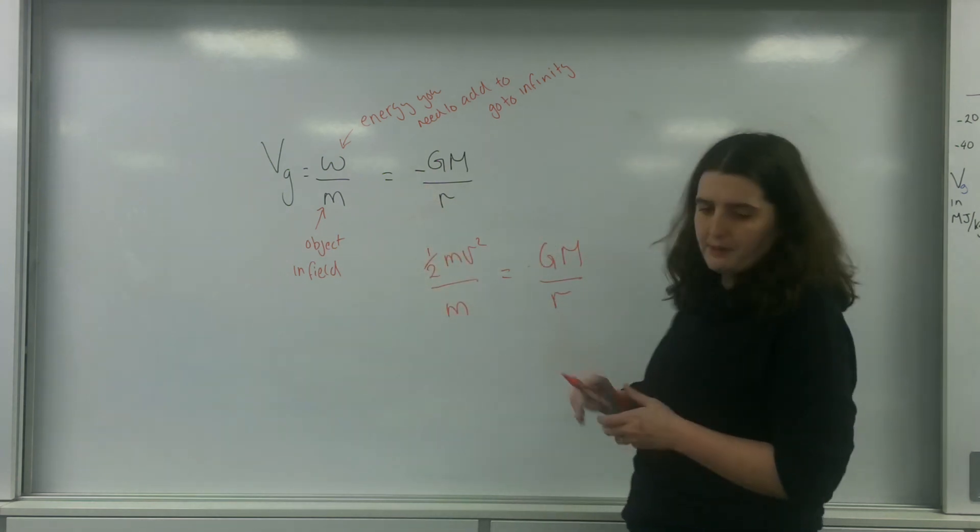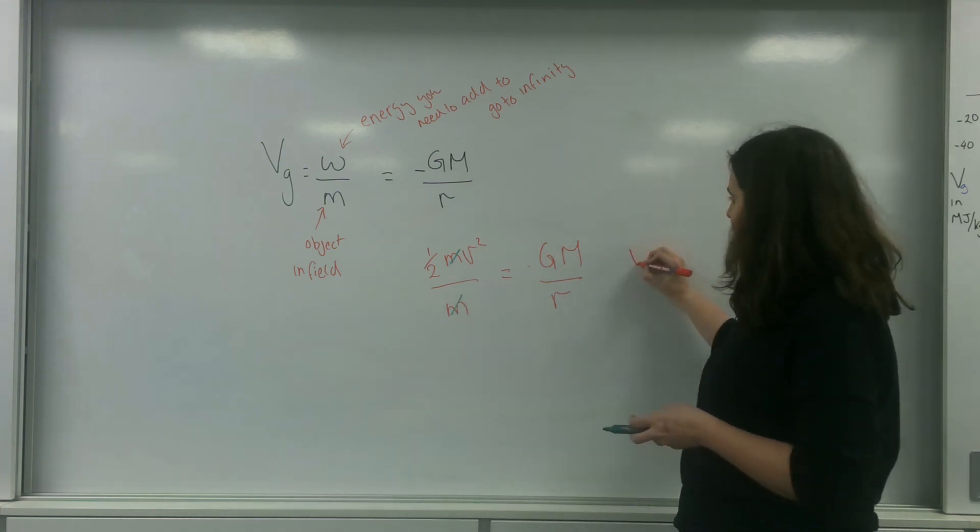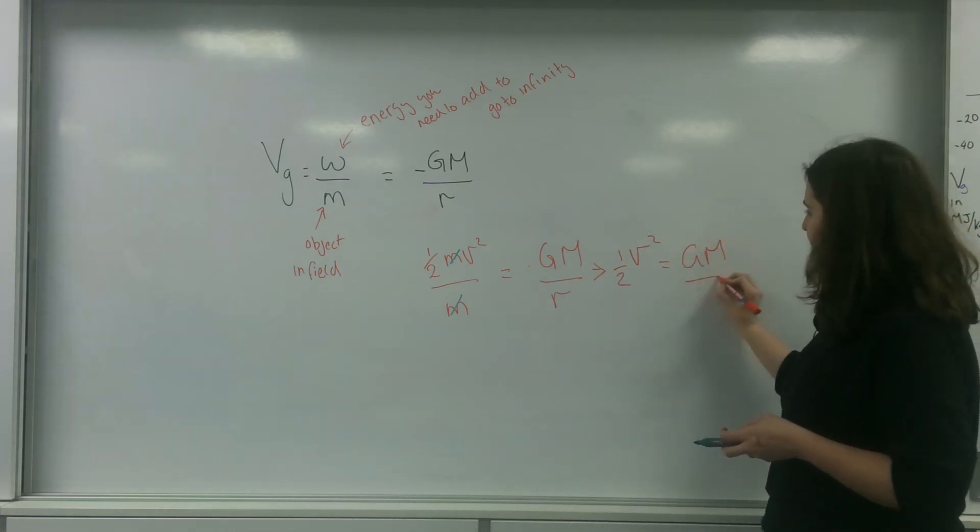And I end up with v squared, a half v squared equals GM over r.